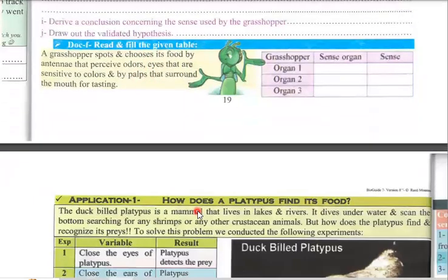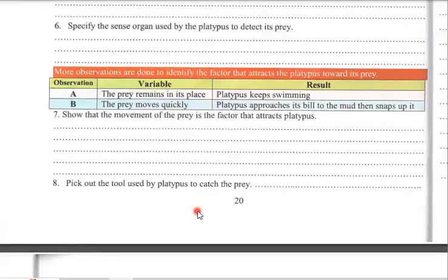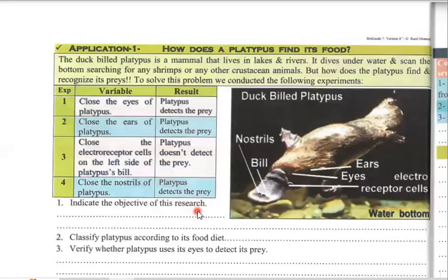Today we're going to work on application 1 on page 20. Please get your copy books and let's start. Application 1: How does a platypus find its food? The duck-billed platypus is a mammal that lives in lakes and rivers. It dives underwater and scans the bottom, searching for shrimps or other crustacean animals. But how does the platypus find and recognize its prey?